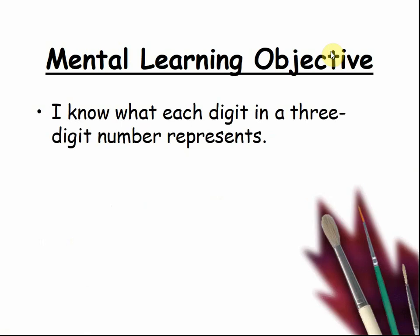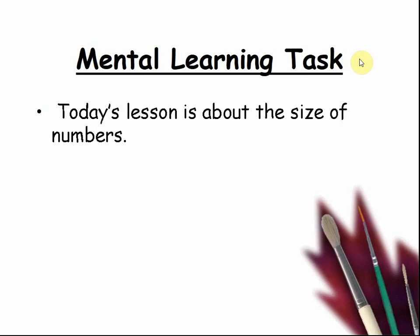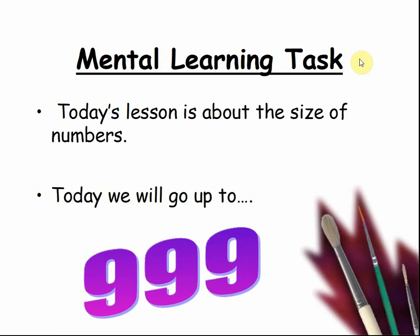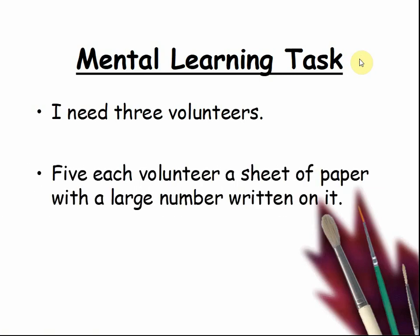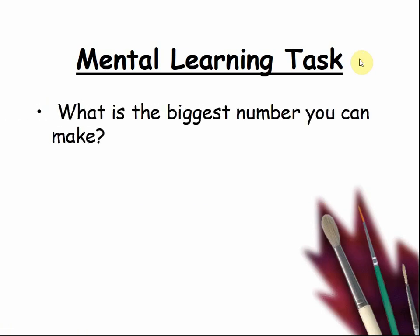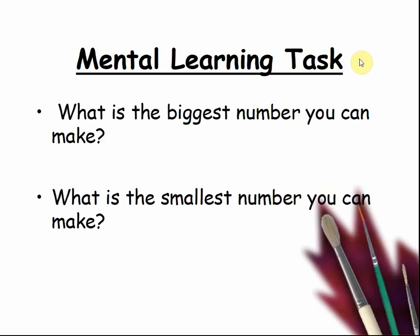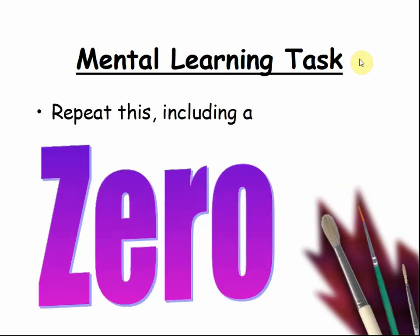Today's mental learning objective: I know what each digit in a 3 digit number represents. Today's mental learning task. Today's lesson is about the size of numbers. Today we will go up to 999. I need 3 volunteers. Pause the video until you have them. Give each volunteer a sheet of paper with a large number written on it. What is the biggest number you can make? What is the smallest number you can make? Repeat this including a zero. Repeat it several times so everyone has a chance to understand the idea.